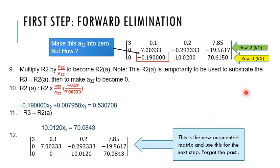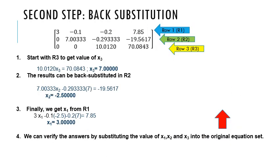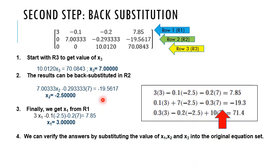We will use the new augmented matrix again for the next step. Now we apply the back substitution to get the answer. We will start at row 3 because there is only one unknown left which is X3. Here we can simply get X3 is equal to 7. Then, we get X2 is equal to negative 2.5.